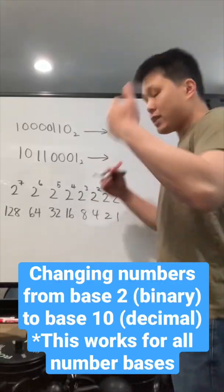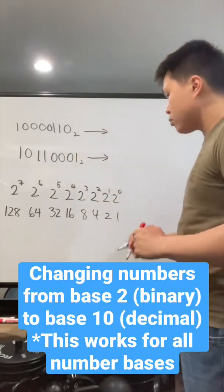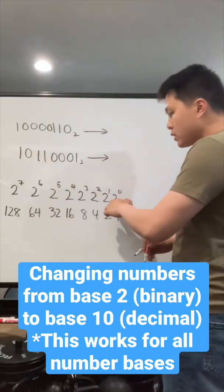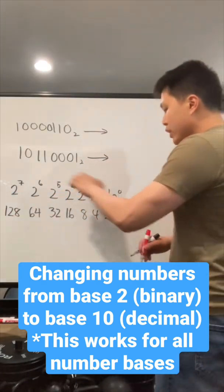In order to change a number that's a different base back to its decimal form, our base 10, what we're going to do is use that base number and write it all out with the exponent.